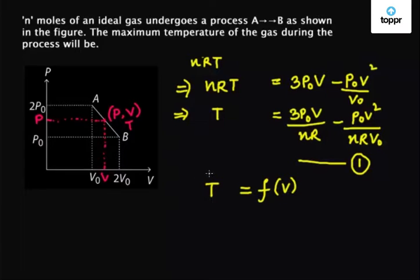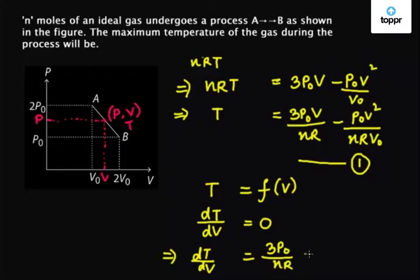Thus the maximum temperature of the process will occur such that dT/dV equals 0. Now we differentiate equation number 1 with respect to volume on both sides to get dT/dV equals 3P0 / nR - 2P0V / (nR·V0).